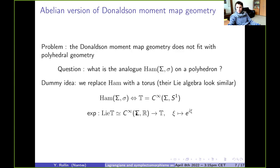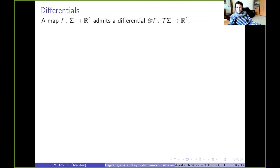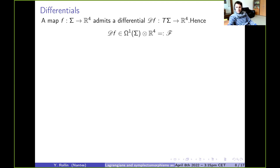The next step involves differentials. If you have a map from Sigma to R4, it has a differential, which you can regard as a one-form on Sigma with values in R4. Since R4 is flat, the differential of F is understood as a one-form with values in R4. This is going to be our moduli space, which will carry this torus action.